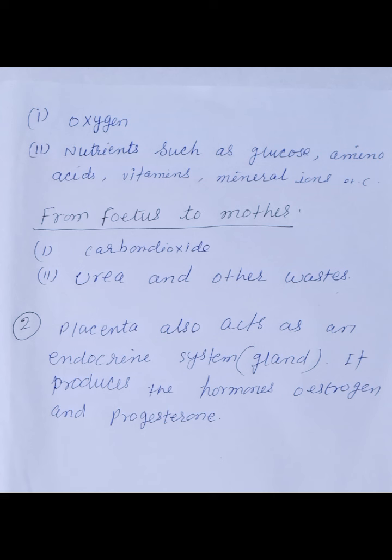Placenta also acts as an endocrine gland. Endocrine gland की तरह placenta act करता है. Endocrine gland hormone secrete करता है — यह आप पहले ही पढ़ चुके हैं. उस hormone का नाम है estrogen and progesterone. Estrogen और progesterone का secretion placenta से होता है.